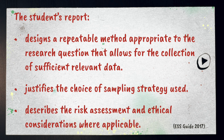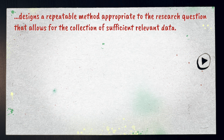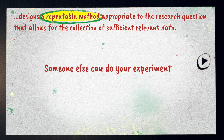Broadly speaking, there are three things you need to do when writing a plan. The marking criteria states that a high-scoring report designs a repeatable method, justifies the sampling strategy, and describes the risk assessment and ethical considerations. We'll start with that first point.